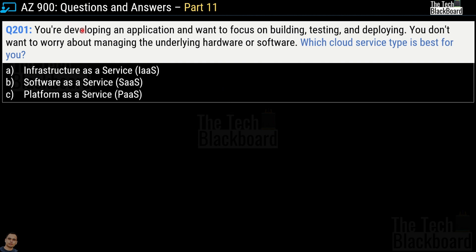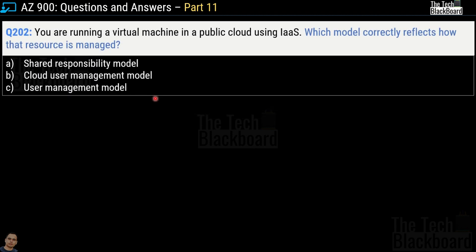Question number 201: you are developing an application and want to focus on building, testing, and deploying without worrying about managing the underlying hardware or software. Which cloud service type is best? The correct answer is option C — platform as a service. Question 202: you are running a virtual machine in a public cloud using IaaS — which model correctly reflects how the resource is managed? The correct answer is option A — the shared responsibility model, where management is shared between the cloud service provider and the end user.